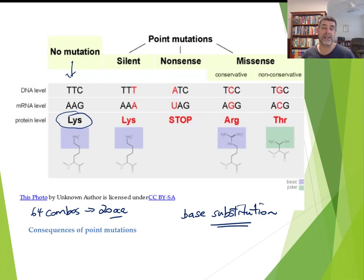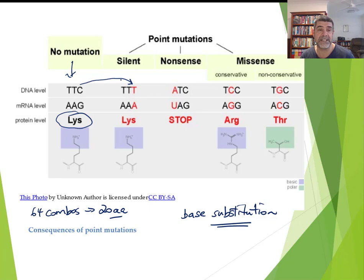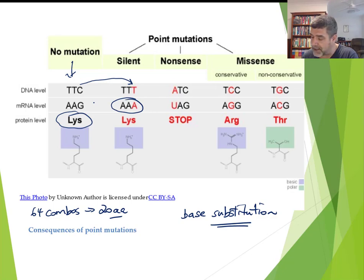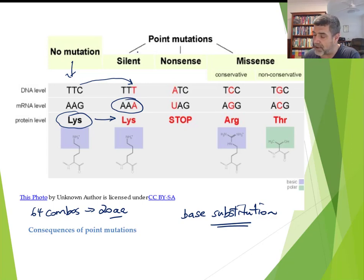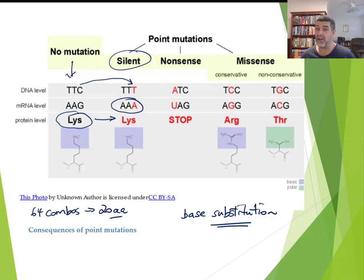Because there is inbuilt redundancy in the system, if we change the end base so the DNA goes from T, T, C to T, T, T, then when the messenger RNA transcribes that we get A, A, A — but at the ribosome, the same amino acid is added in. This is what we call a silent mutation — a mutation we don't even know is there, because the change in DNA has produced the same amino acid on the polypeptide chain.